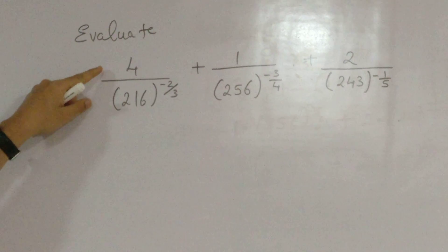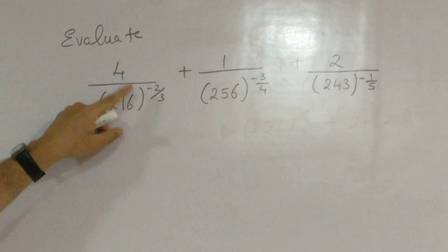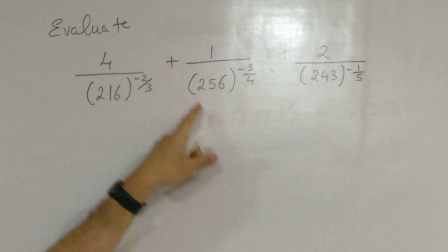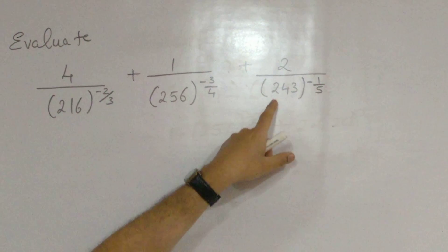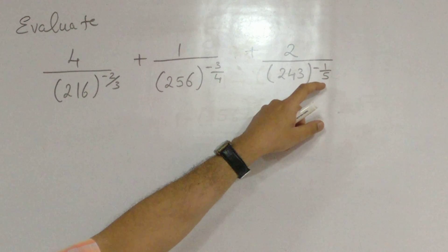What the question says, 4 upon 216, the whole raised to minus 2 by 3, plus 1 upon 256, the whole raised to minus 3 by 4, plus 2 upon 243, the whole raised to minus 1 by 5.